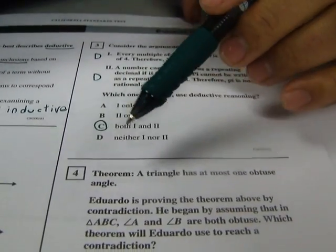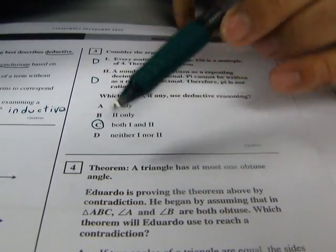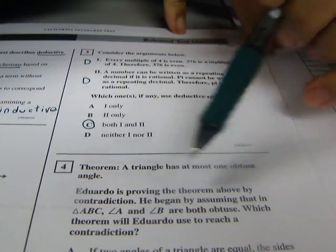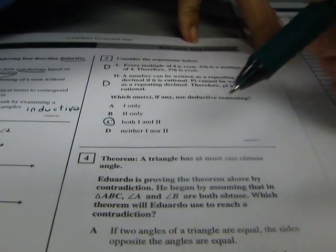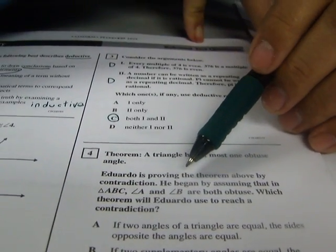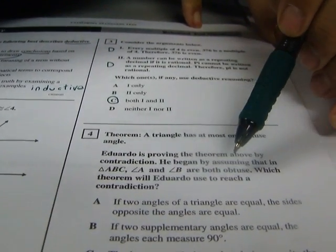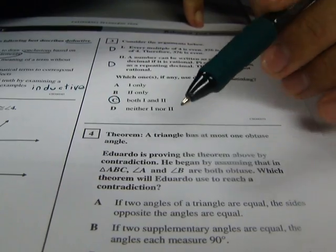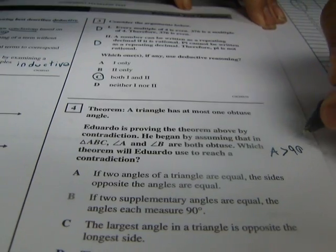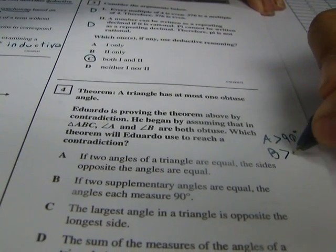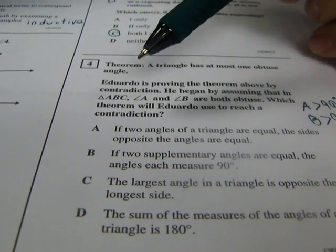Okay, let's start with this one. Theorem: A triangle has at most one obtuse angle. Eduardo is proving the theorem above by contradiction. That means he's going to try to say something against it and then prove that that part is false. He began by assuming that in triangle ABC, angle A and angle B are both obtuse. That means each one of them is more than 90 degrees. So he's saying that angle A is greater than 90 degrees, and he's also saying that angle B is greater than 90 degrees. Which theorem will Eduardo use to reach a contradiction?